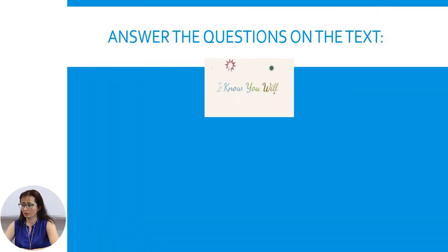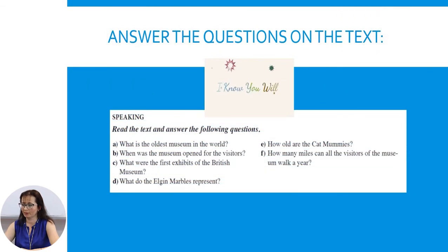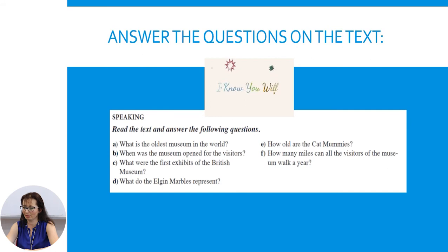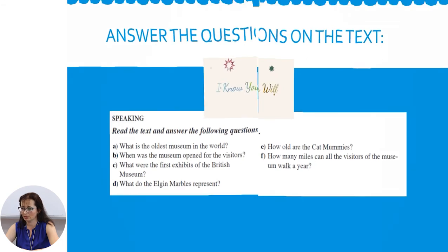Now answer the questions on the text. What is the oldest museum in the world? When was the museum opened for visitors? What were the first exhibits of the British Museum? What do the Elgin Marbles represent? How old are the cat mummies? How many miles can visitors walk in the museum? Pause the slide and write the answers independently.